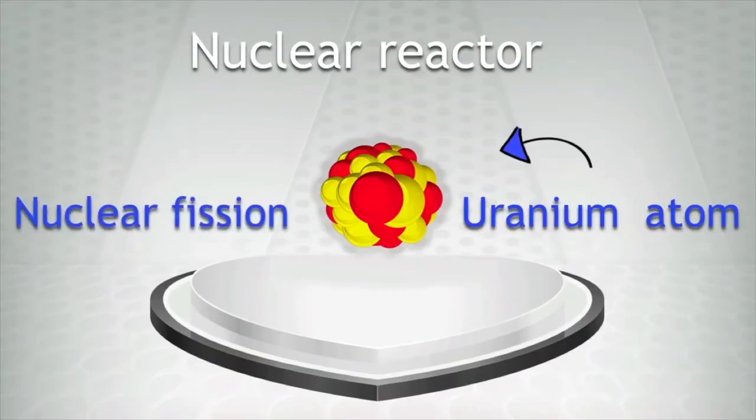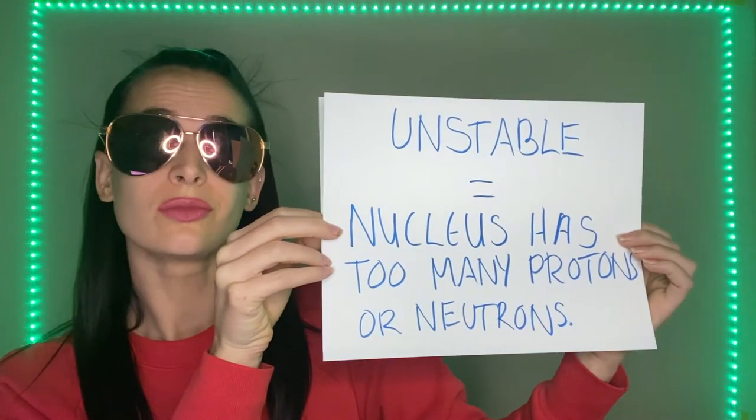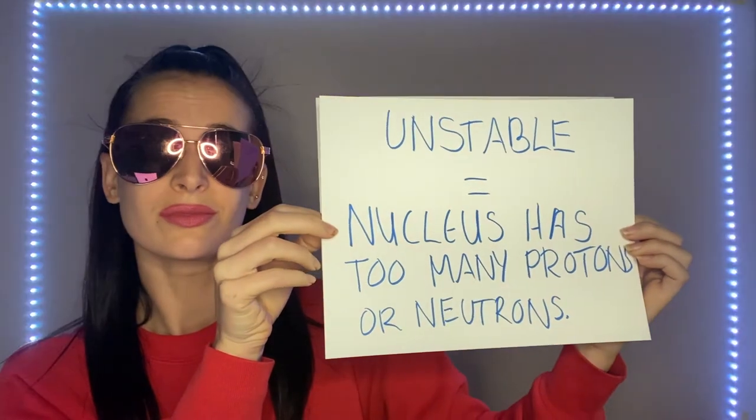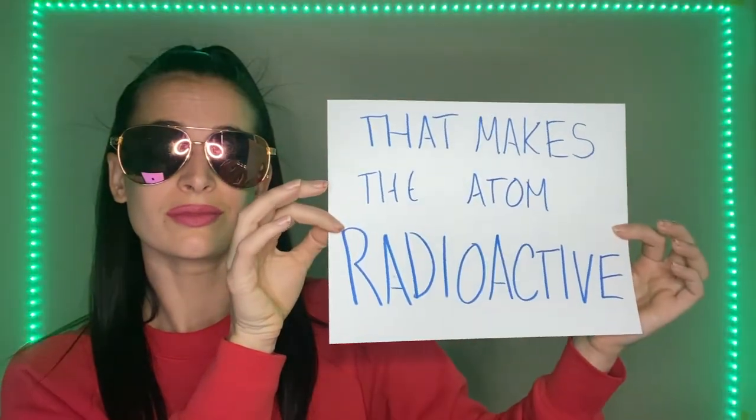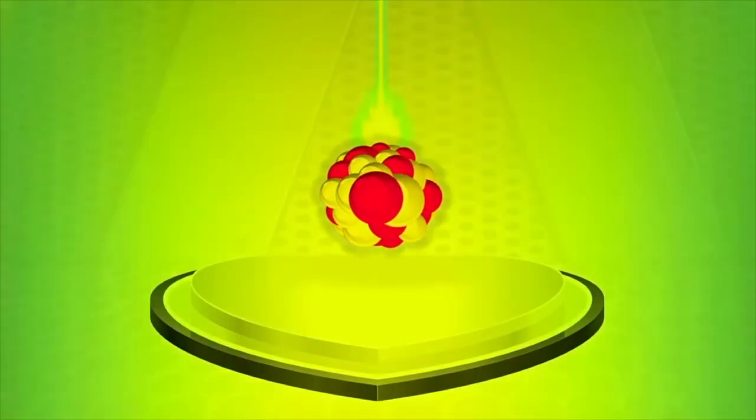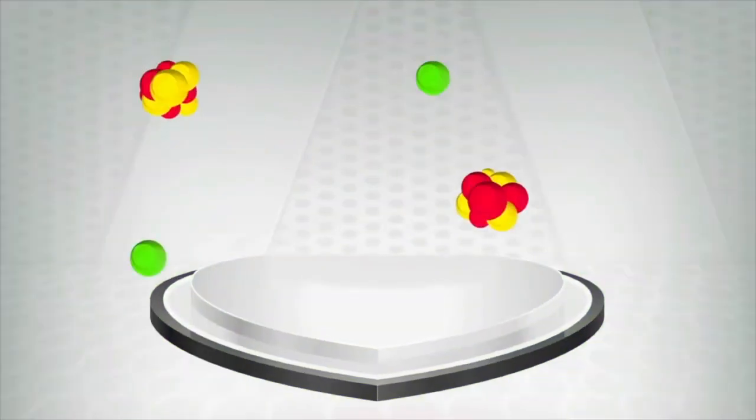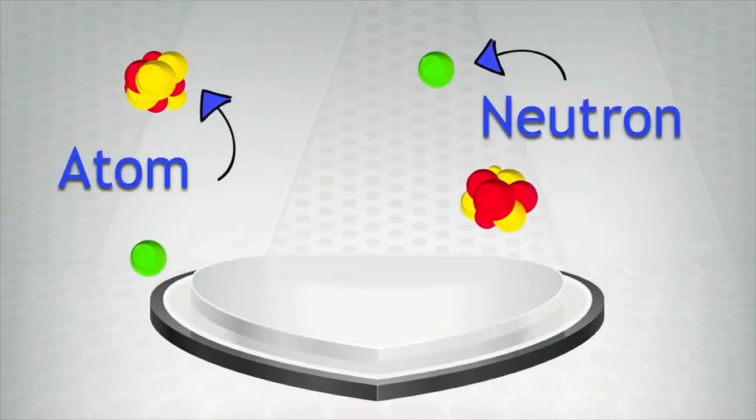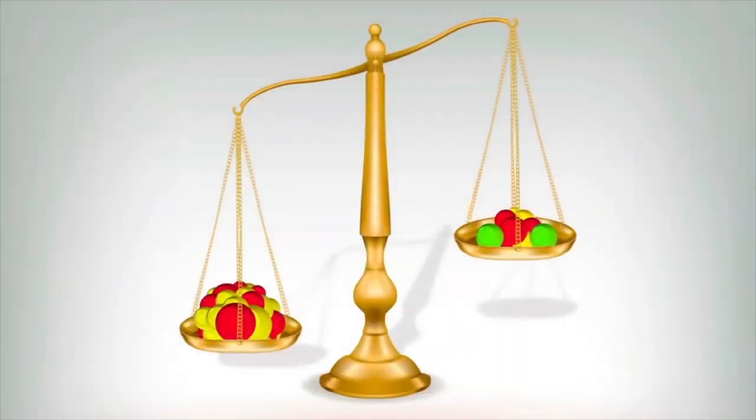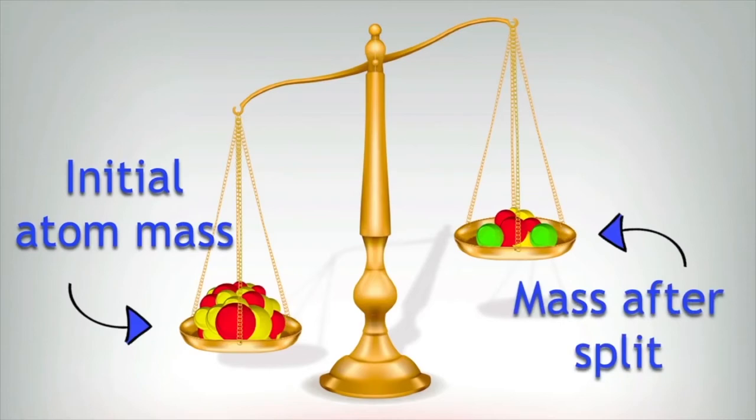This is known as nuclear fission. These large atoms are very unstable and can be split up by firing a neutron at them. They split into smaller atoms and a number of neutrons. If we measure the mass of the initial atom and the total mass of the products after the split, there seems to be a discrepancy. Some mass seems to be lost.